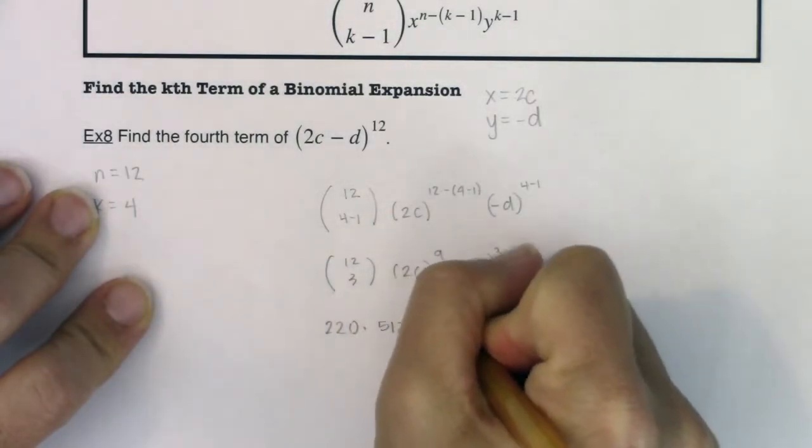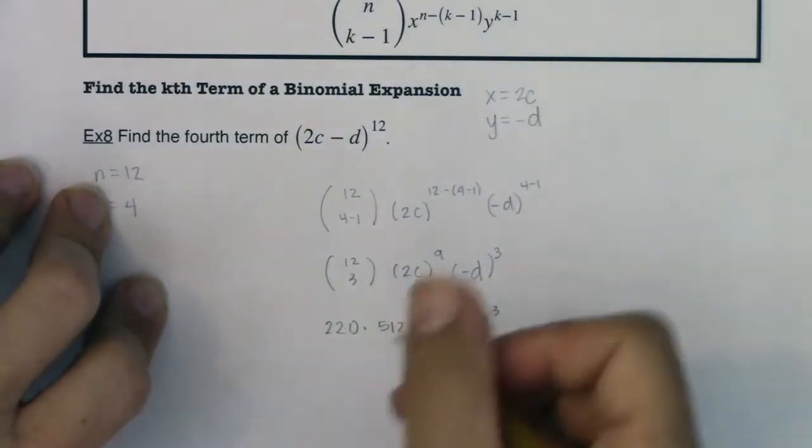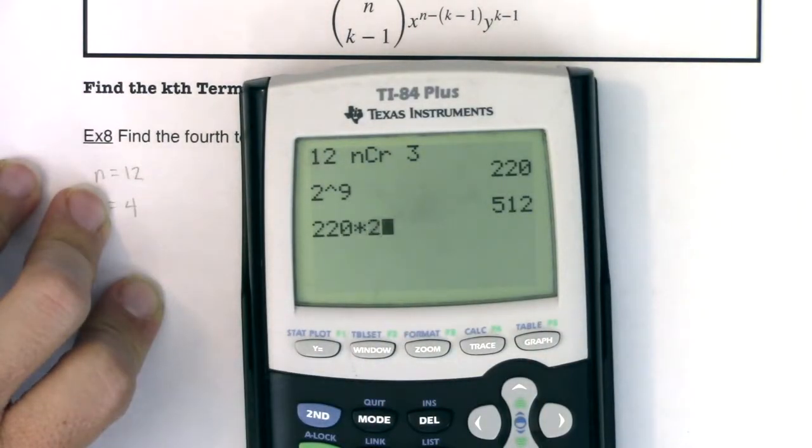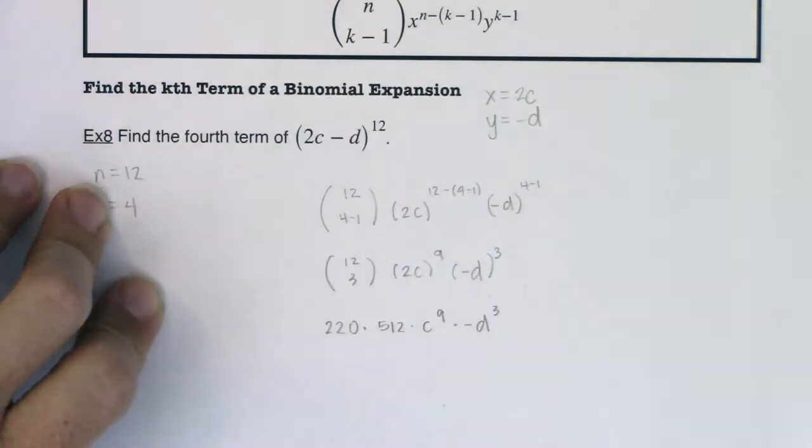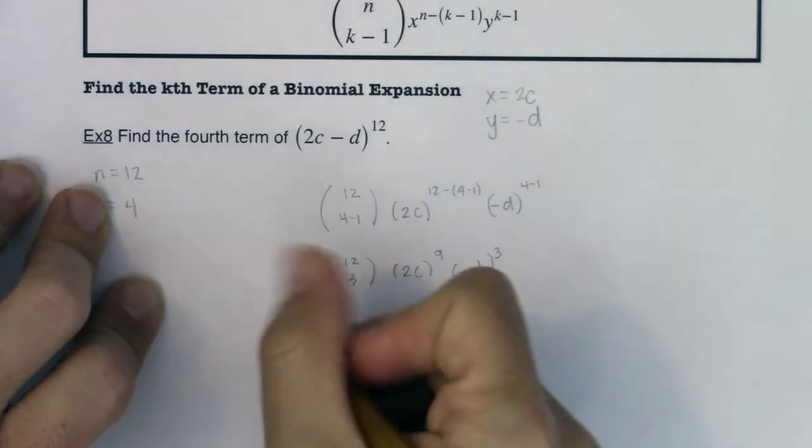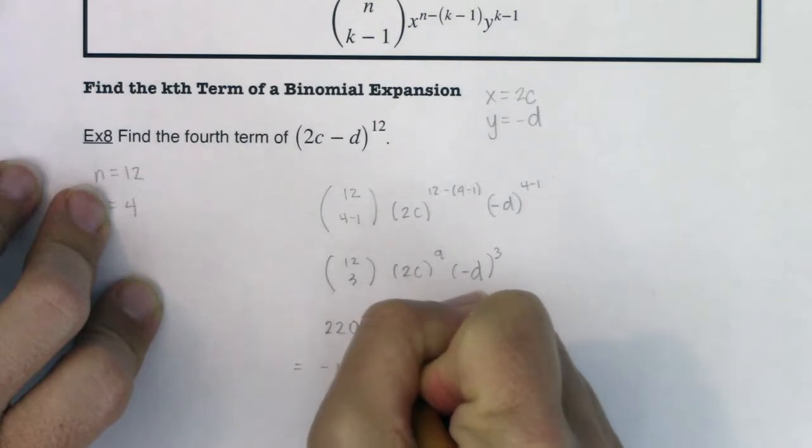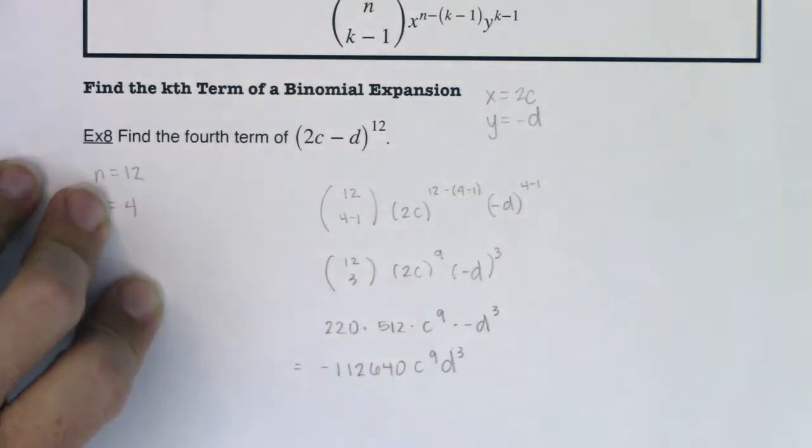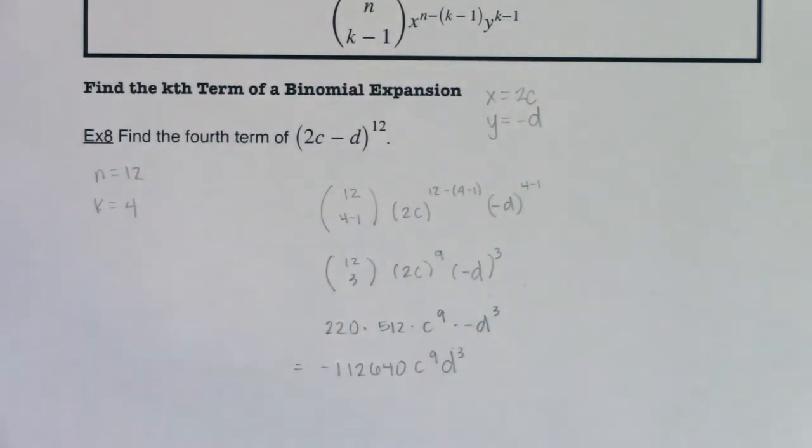And then we'll have c to the 9th times negative d cubed. So I'm going to clean this up. Actually, let me see what 220 times 512 is. 220 times 512 gives me 112,640. And I don't want to forget this negative in front of it. So ultimately, this is negative 112,640 c^9 d^3. That is the fourth term if I was going to expand this binomial.